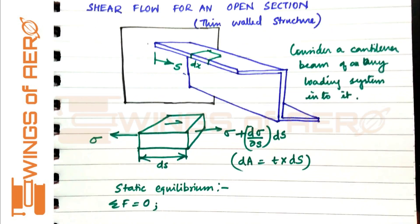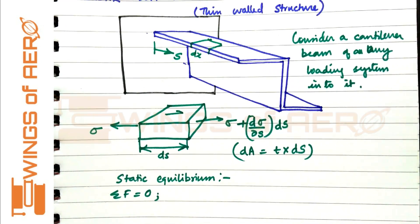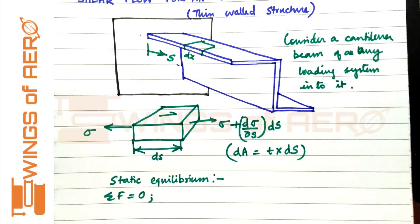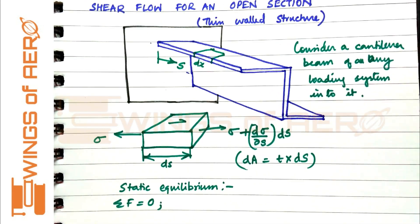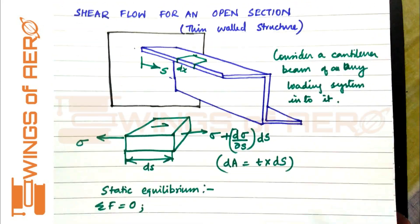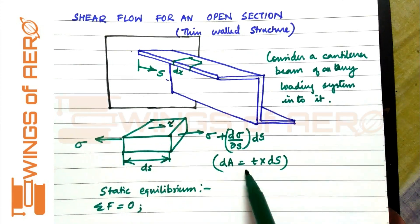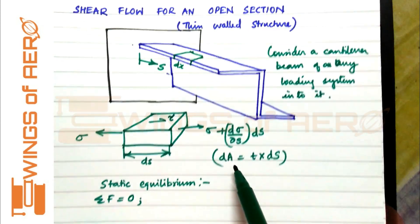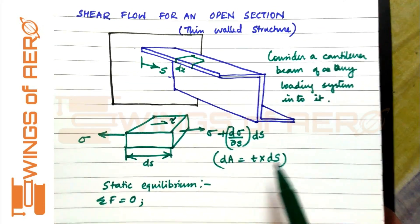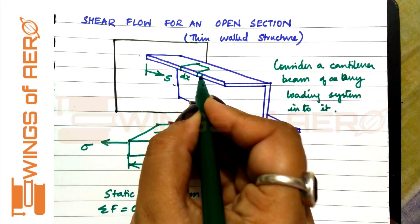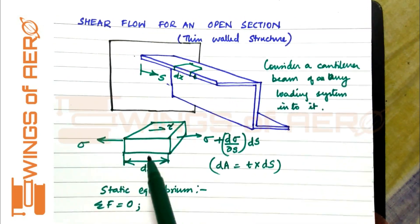We are going to take a small portion, and over that small portion when loading takes place, only two types of stress occur as discussed earlier — one is direct stress and one is shear stress. The cross-sectional area can be found by means of thickness T multiplied by DS.